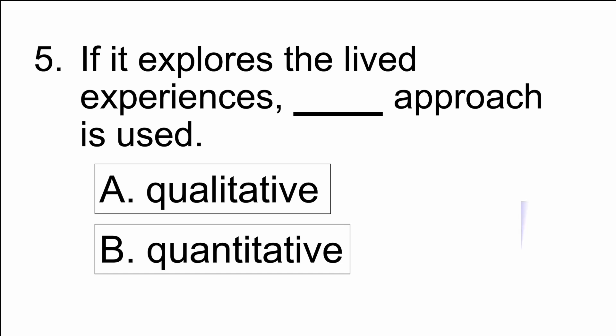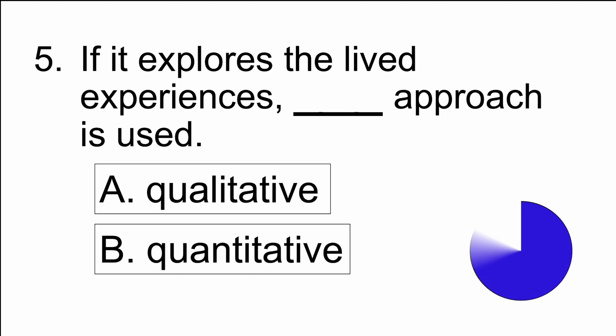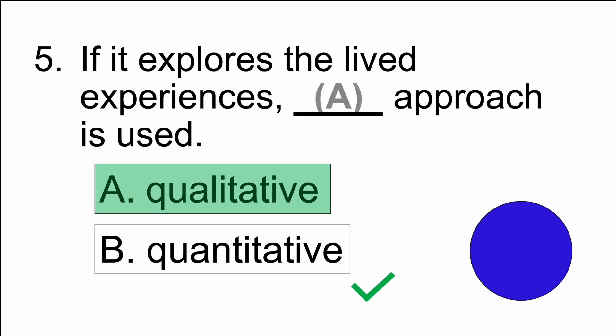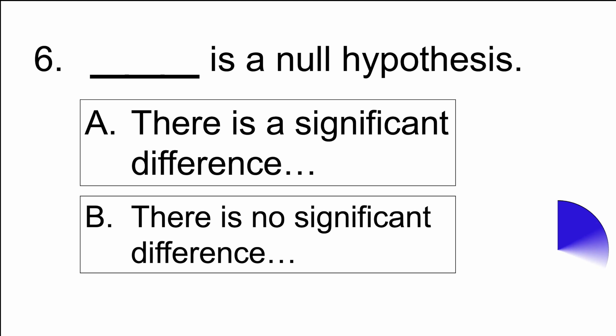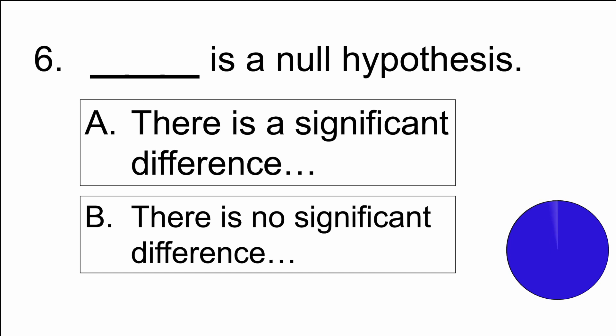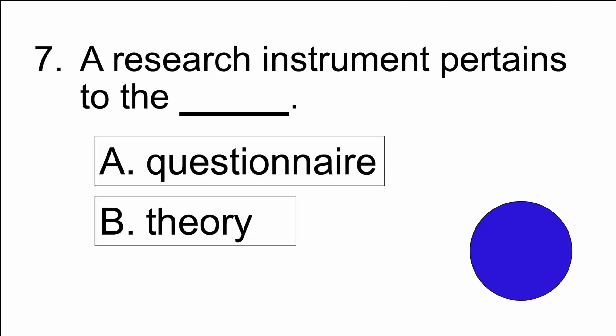The answer is A) qualitative. Number six: blank is a null hypothesis — A) there is a significant difference, or B) there is no significant difference. The answer is B) there is no significant difference.